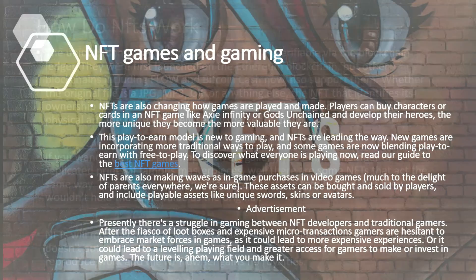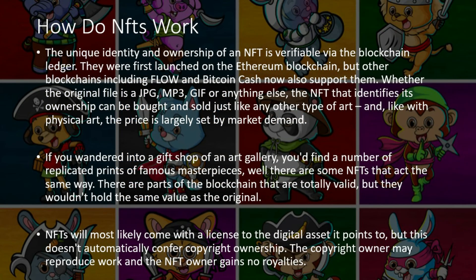How do NFTs work? The unique identity and ownership of an NFT is verifiable via the blockchain ledger. They were first launched on the Ethereum blockchain, but other blockchains including Flow and Bitcoin Cash now also support them. Whether the original file is a JPG, MP3, GIF, or anything else, the NFT that identifies its ownership can be bought and sold like any other type of art, and like physical art, the price is largely set by market demand. While some NFTs act like replicated prints of famous masterpieces, parts of the blockchain are totally valid but wouldn't hold the same value as the original.